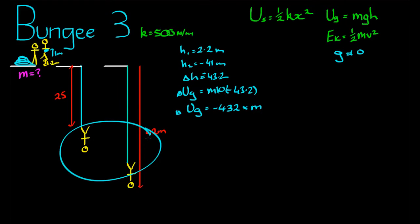So the change in gravitational potential comes to a total of negative 432 multiplied by the mysterious mass. Now we can figure out, it should be obvious that we can figure out, the person's 2 meters tall, here, here, and here. We should be able to figure out the extension of that bungee cord.